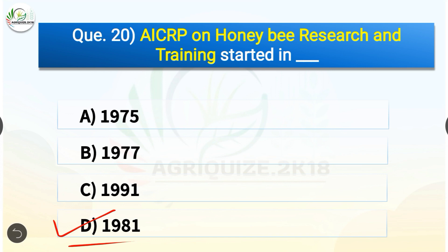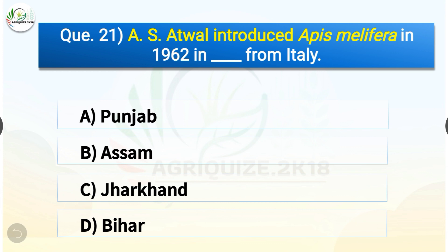Question number twenty-one: A.S. Atwal introduced Apis mellifera in 1962 in which state from Italy? The options are: Punjab, Assam, Jharkhand, or Bihar. The correct answer is option A — Punjab. A.S. Atwal introduced Apis mellifera in 1962 in Punjab from Italy.